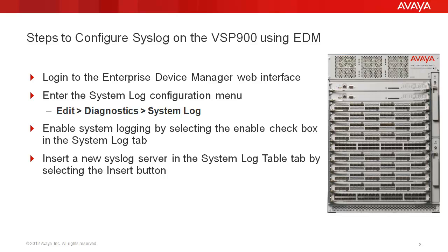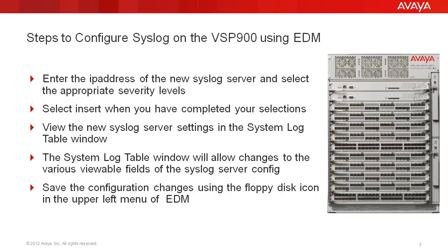Next, we'll insert a new syslog server in the System Log Table tab by selecting the Insert button. We'll enter the IP address information of the new syslog server and select the appropriate severity levels, then select Insert when we have completed our selections. We'll view the new syslog server settings in the System Log Table window, which allows changes to the various viewable fields of the syslog server config. Finally, we'll save the syslog configuration changes using the floppy disk icon in the upper left menu of EDM.